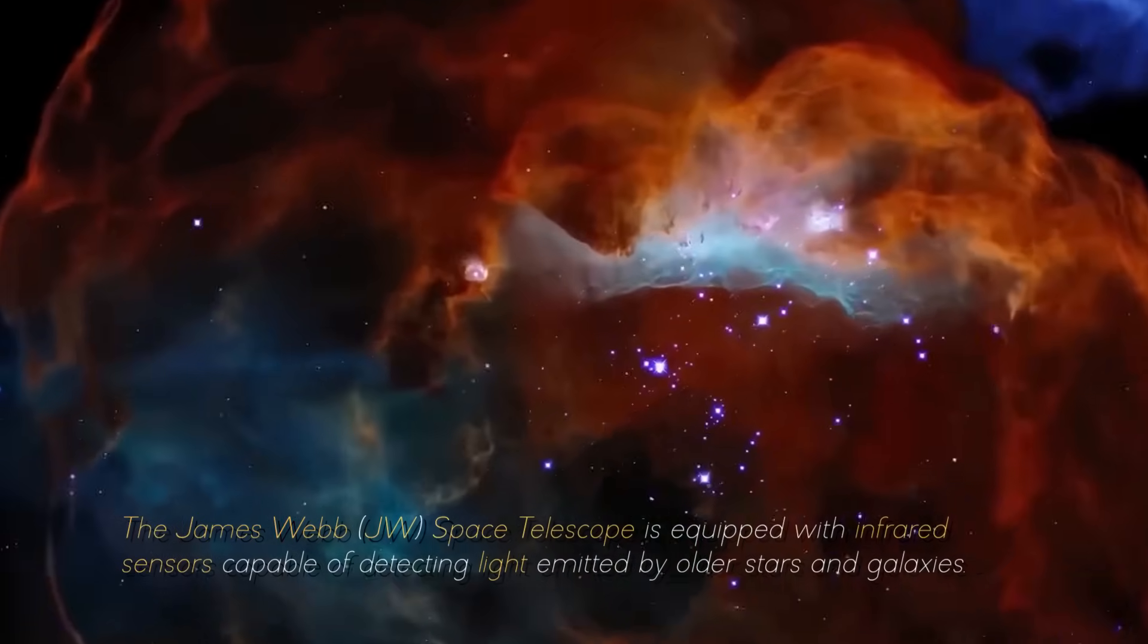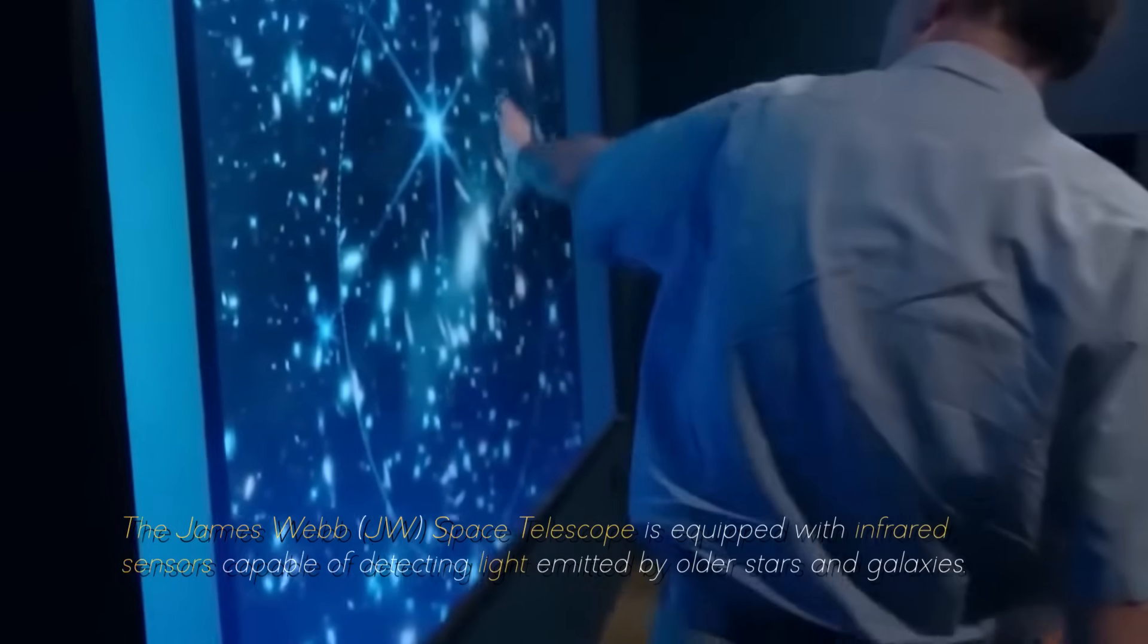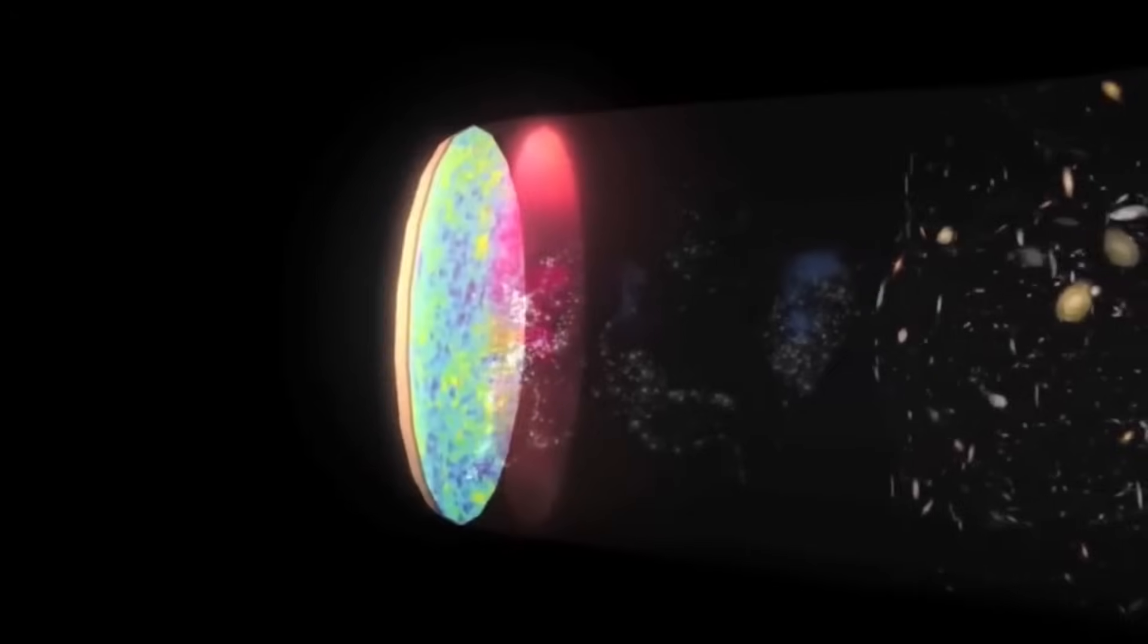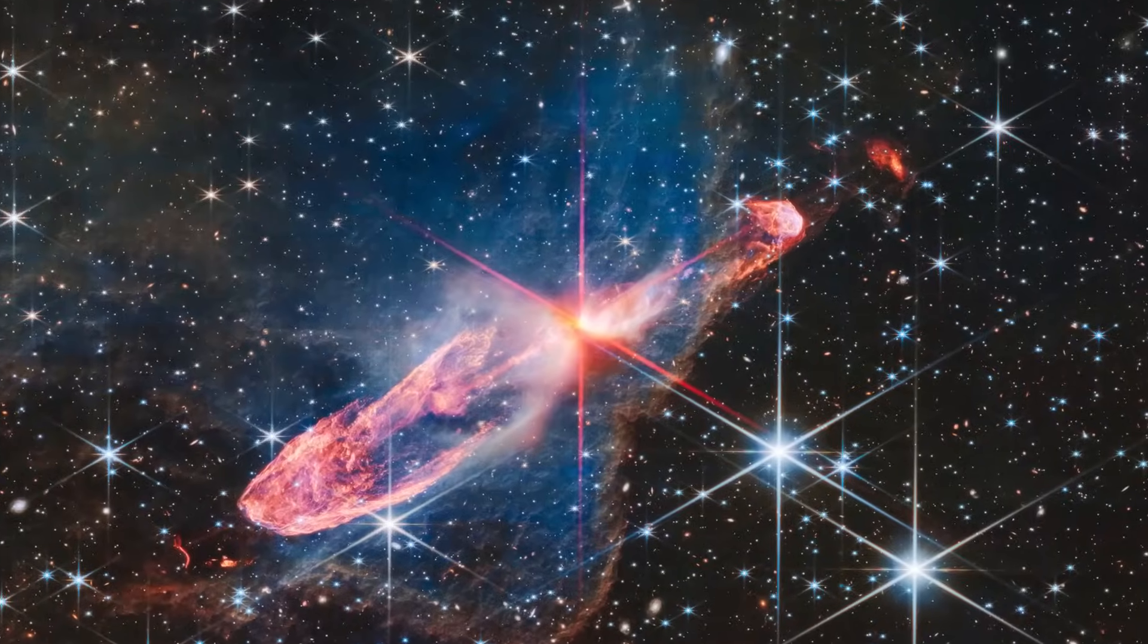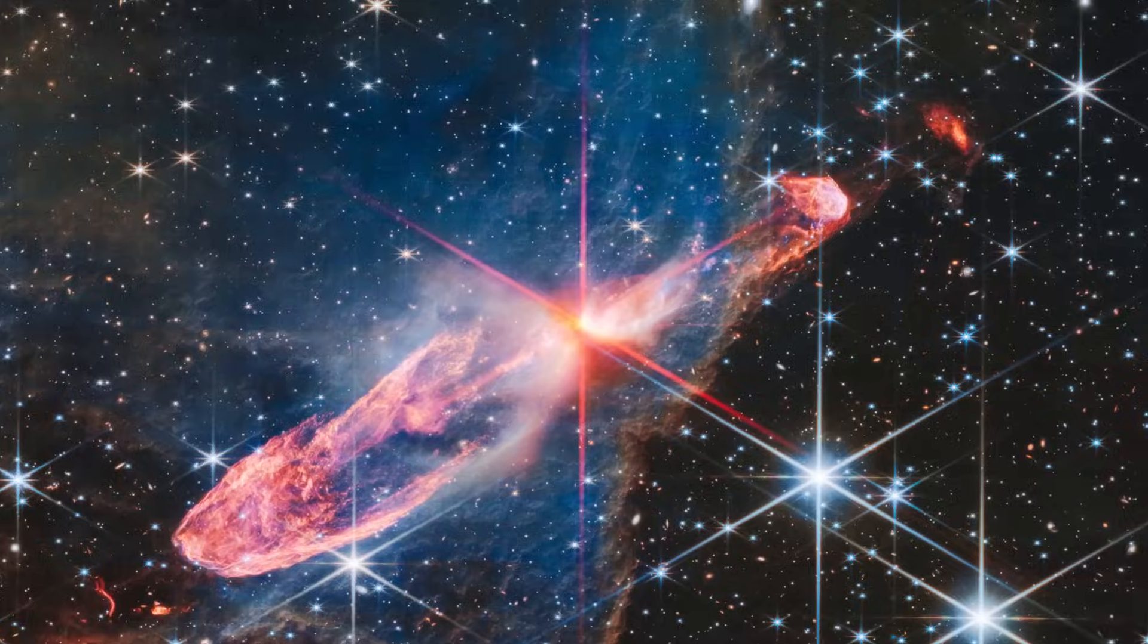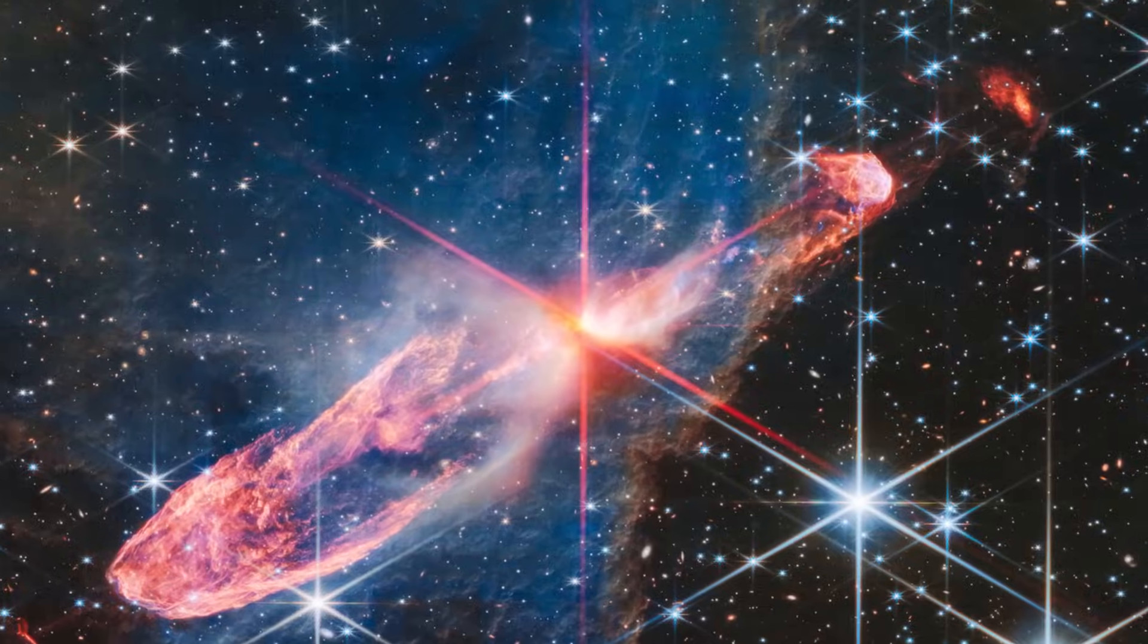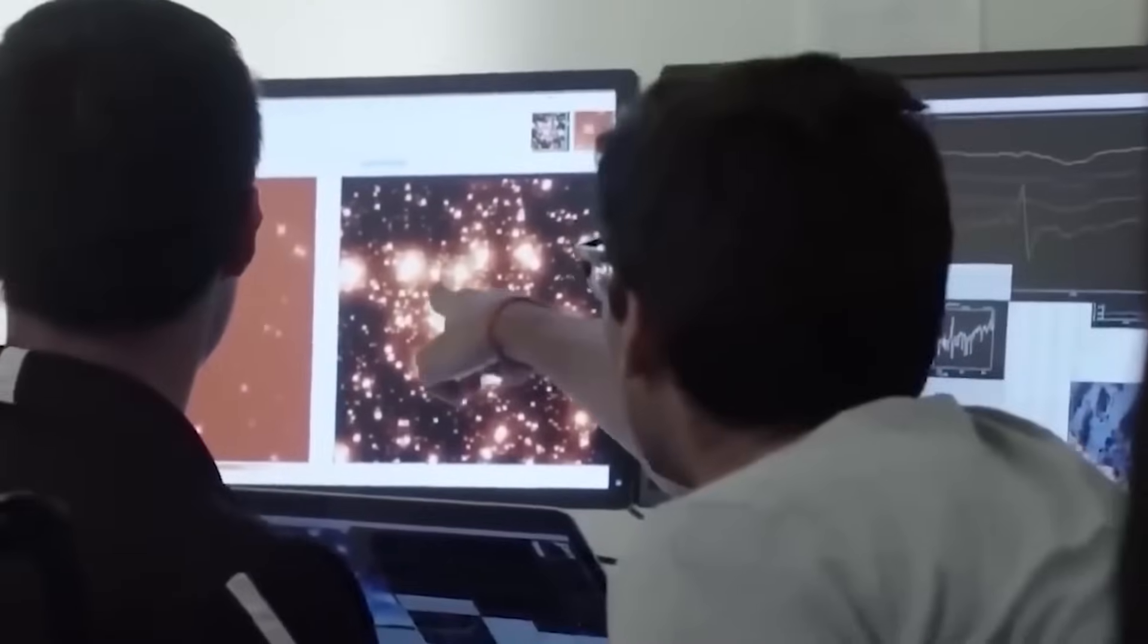The James Webb Space Telescope is equipped with infrared sensors capable of detecting light emitted by older stars and galaxies. This allowed astronomers to go back in time almost 13.5 billion years to the beginning of the known universe. Prior to the discovery, scientists had detected numerous galaxies in the oldest regions of the universe approximately 350 million years after the Big Bang using data collected by the JWST. These distant stellar systems were small and in agreement with the predictions of current cosmological models.